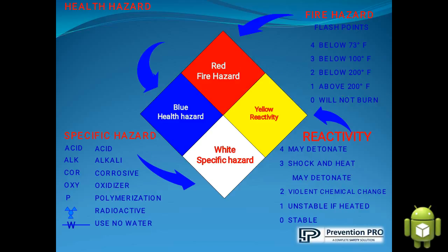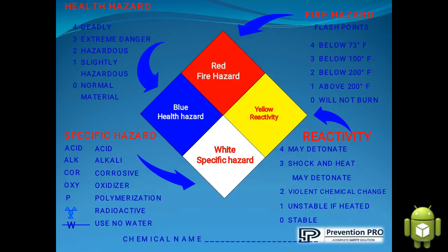Finally, the blue color indicates health hazard. The numbers range from 0 to 4. If the blue box has the number 0, it is a normal material that will not react. Number 1 means it is slightly hazardous. Number 2 means it is hazardous. Number 3 means it is an extreme danger. And if the blue box has the number 4, it says that it is deadly. This is all about the HAZCOM label.